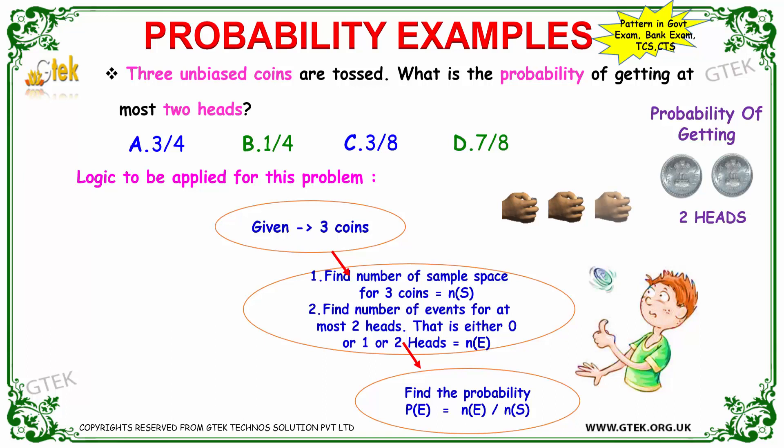Let's talk about three unbiased coins that are tossed. We need to find the probability of getting at most two heads. At most two heads indicates it can be zero, one, or the maximum is two.